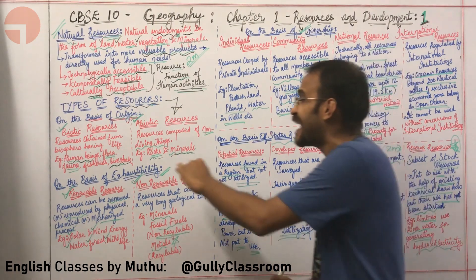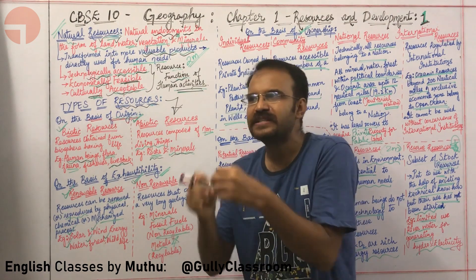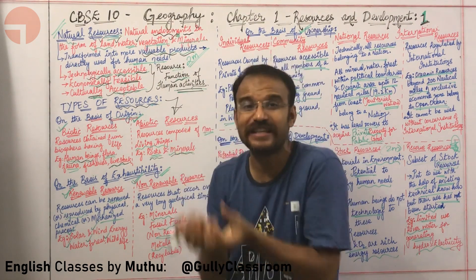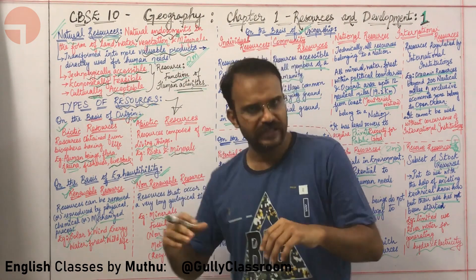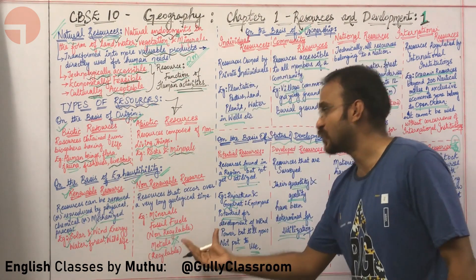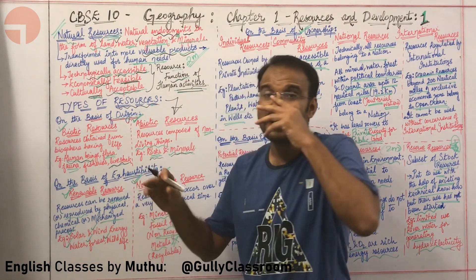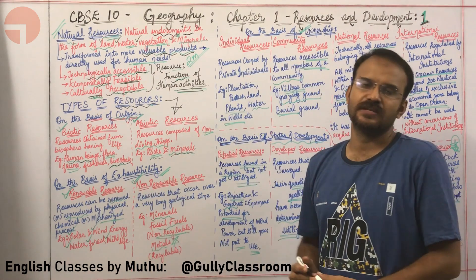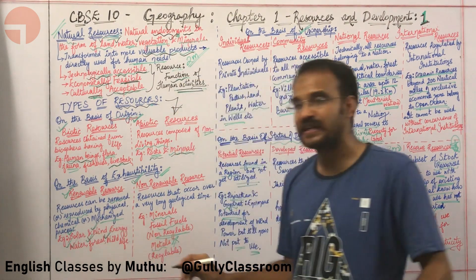On the basis of exhaustibility — the property by which a resource can become extinct or get finished off — resources are classified as renewable or non-renewable. Renewable resources can be renewed or reproduced and used again and again by physical, chemical and mechanized methods. Different types of renewable resources are solar energy, wind energy, water, forest and wildlife. For example, we can again and again use solar energy through solar panels to generate electricity.